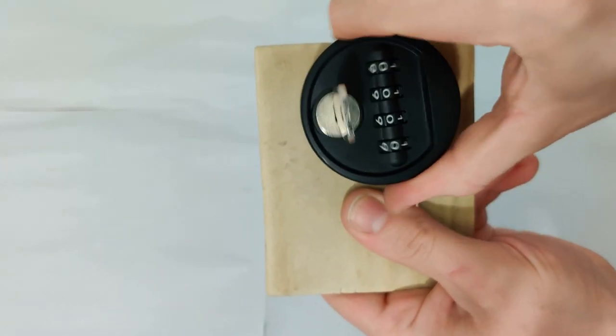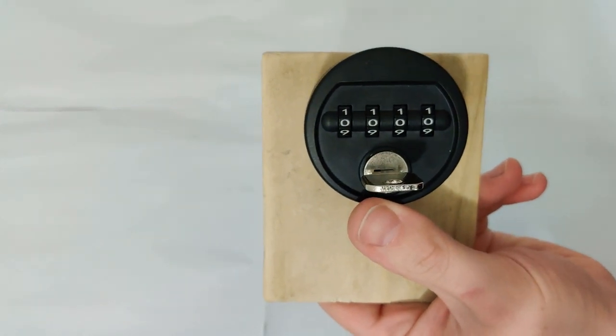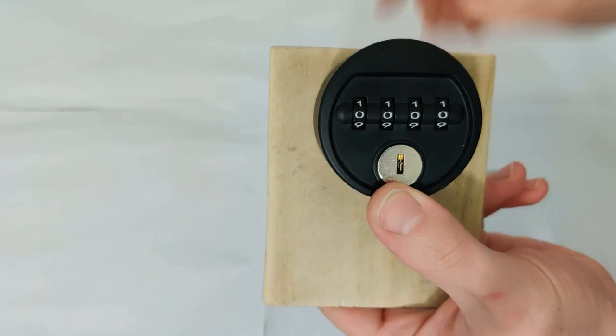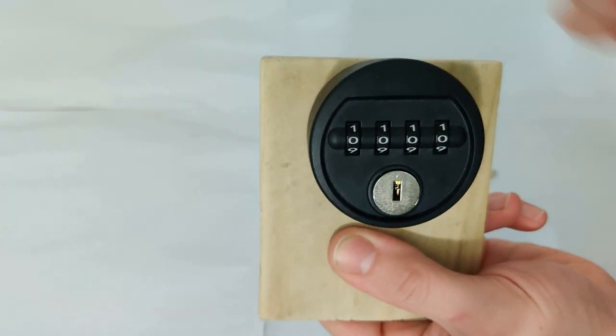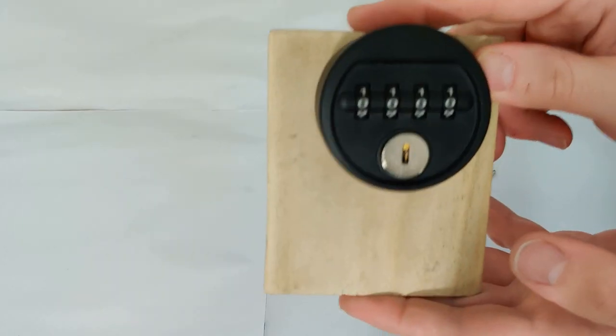Now as you can see there, the actual combination itself has just been reset back to zero. So now we can take the key out, give it a test just to make sure it has fully reset again, and it has. And that is the code fully reset on the lock.